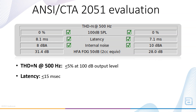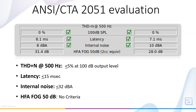Latency measures delay due to hearing aid processing, which can cause an undesirable misalignment between hearing aid processed sound and direct sound; devices must not exceed 15 ms of latency. Internal noise measures device-generated noise that may mask desirable sounds — testing should be completed with noise-floor-lowering processing such as auto-muting or downward expansion turned off, and results should not exceed 32 dB. High-frequency average full-on gain uses a 50 dB SPL pure tone to measure the output with gain set to maximum; the result is transformed from 0.4 cc and reported as a 2 cc equivalent value, with no pass/fail criteria for this measurement.